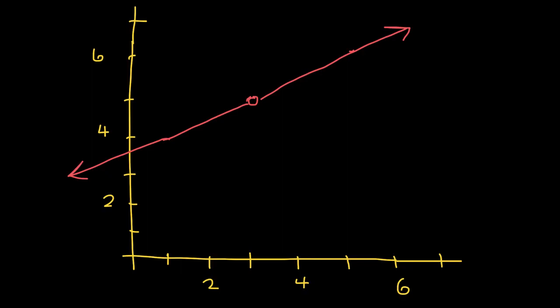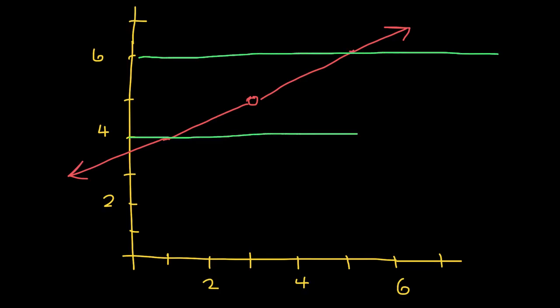What if I want all of our function values to be within one unit from our limit? The limit here is 5, so what if I wanted all of your function values to be within one unit from 5? All of these function values here are within one unit from the limit.